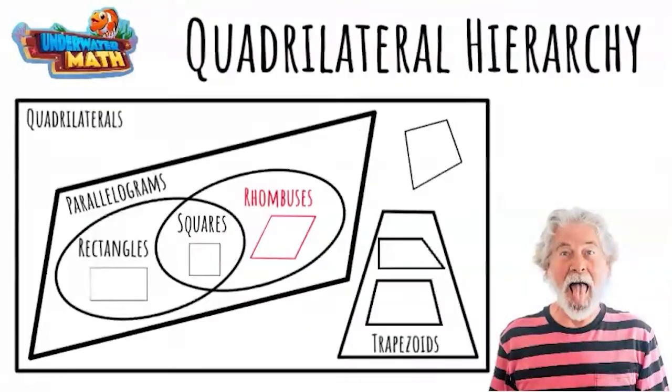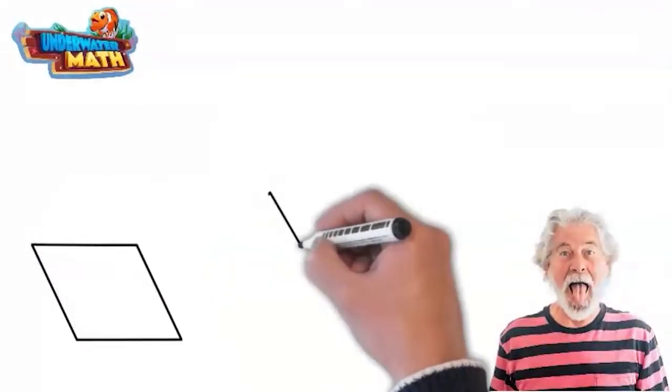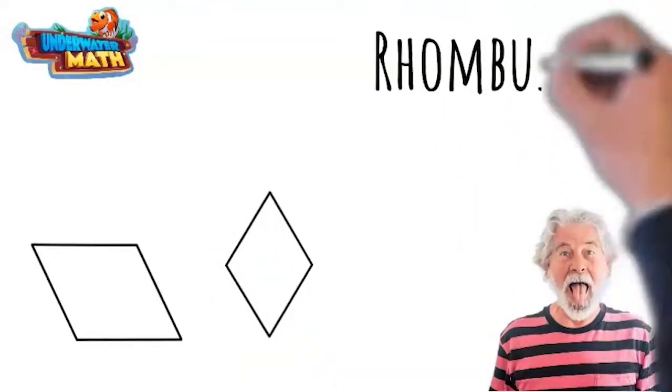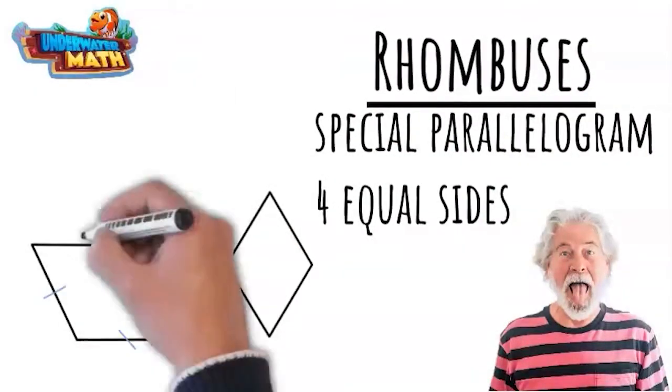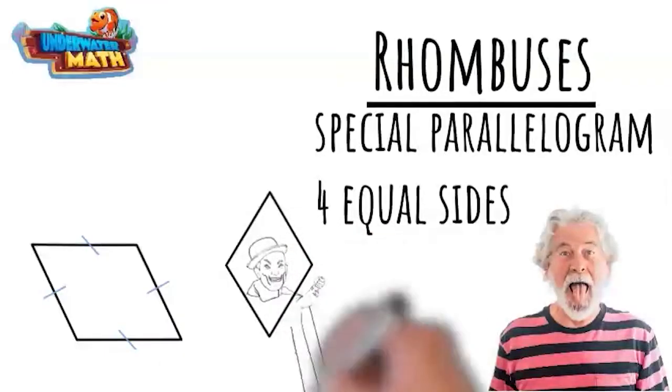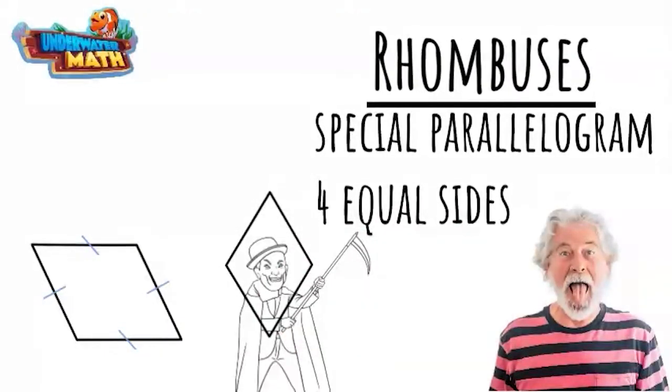The other special parallelogram is the rhombus. It also has the two pairs of parallel sides, but it has four equal sides. It might look like a diamond to you. Be cautious. It's a diamond in the rough and can attack unprovoked at any time.